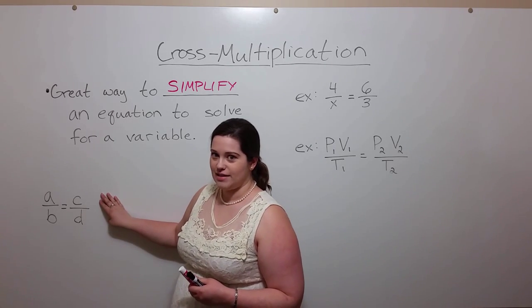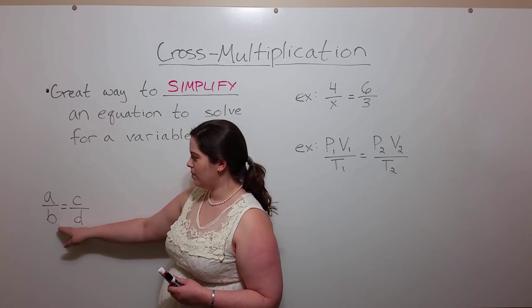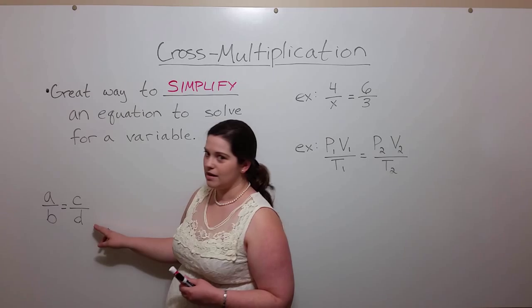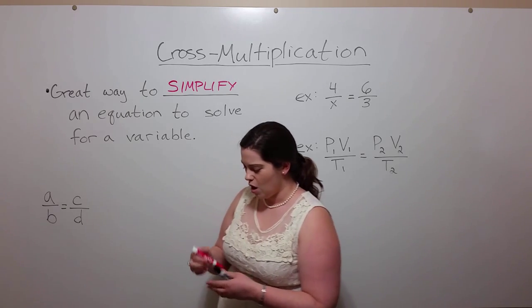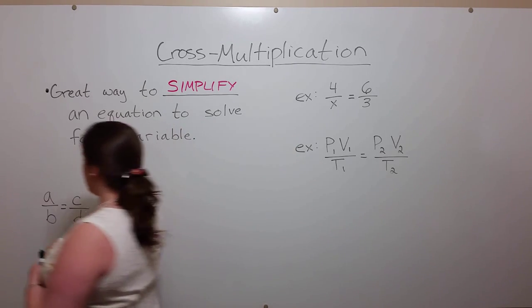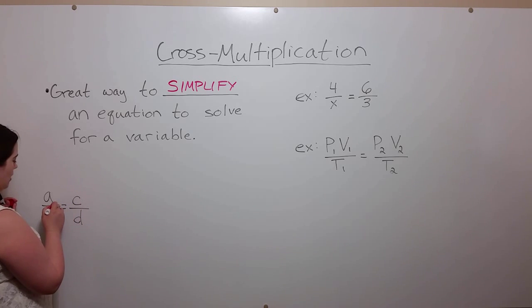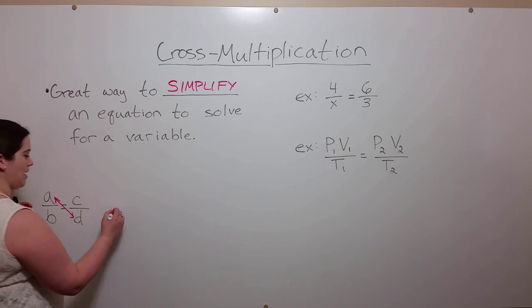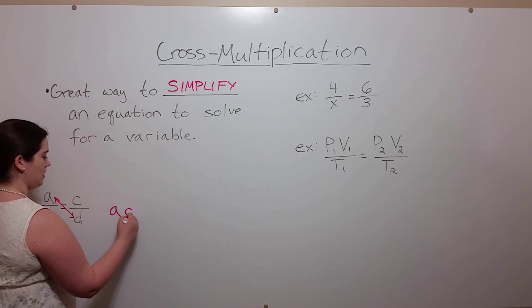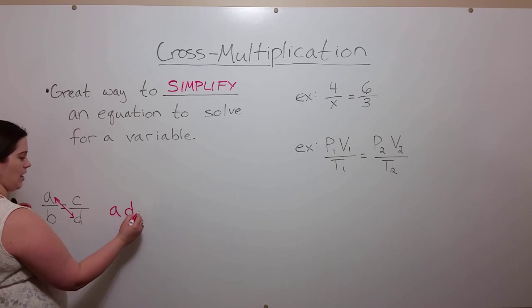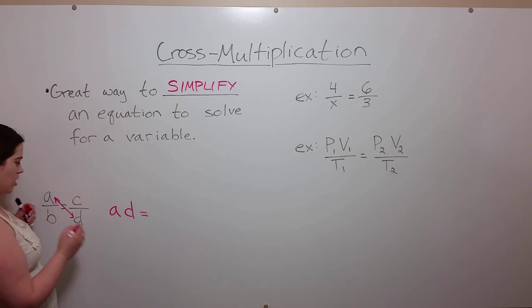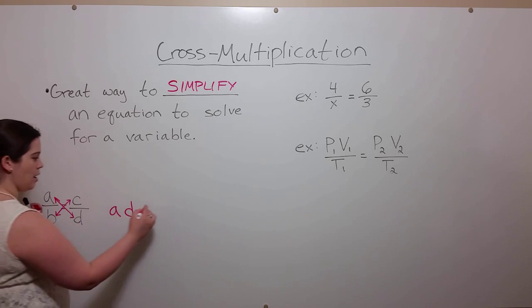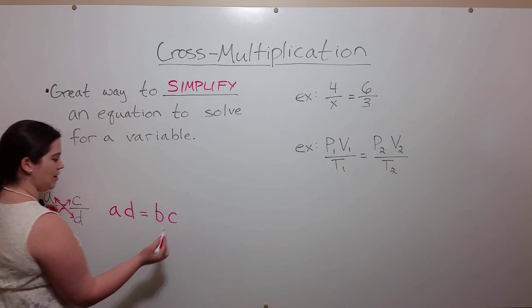Let's take this generalized example here. A divided by B equals C divided by D. The way cross multiplication works is you multiply these corners getting A times D and that is equal to the multiplication product of these corners, B times C.